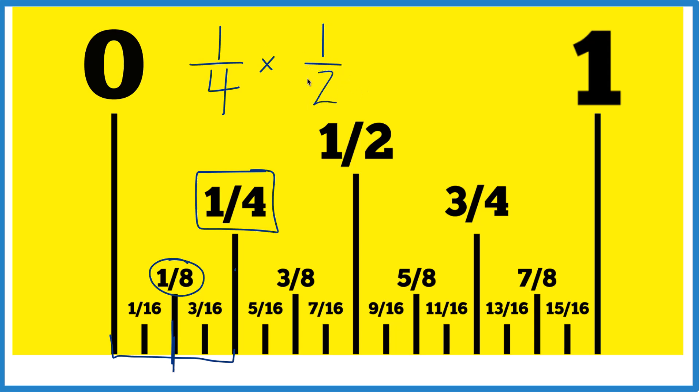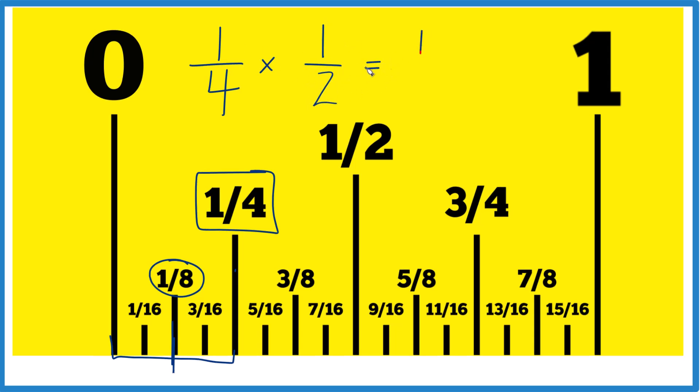And we end up with one times one, that equals one, four times two, that equals eight, and we get one eighth again. So either way you do it, you're going to end up with half of one fourth, and you're going to get one eighth.